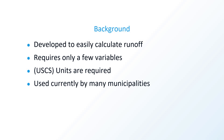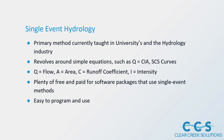This method was developed to easily calculate runoff from a site. There are only a few variables involved — actually only four. Q equals CIA. USCS English units are required for this equation to work properly. It's still used currently by many municipalities around the country, although there are better methods — continuous simulation models to be exact — but it can still give a good rough estimate for projects.